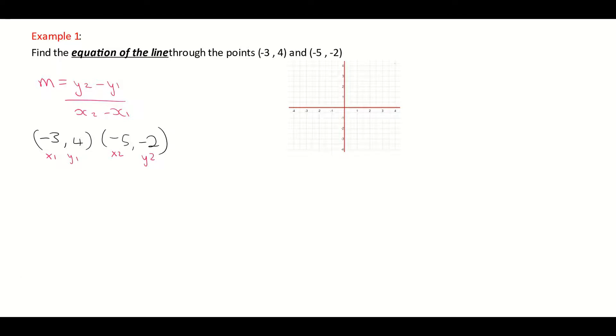Now I'm going to sub them into my slope formula. m is equal to y2, which is negative 2, subtract my y1, which is 4, all over x2, which is negative 5, minus my x1, which is negative 3. So just be careful here that there's a double negative. There's a minus from the formula and a minus from the negative 3.